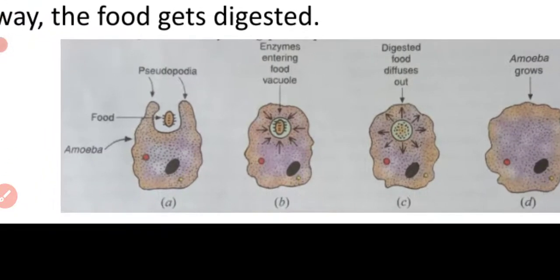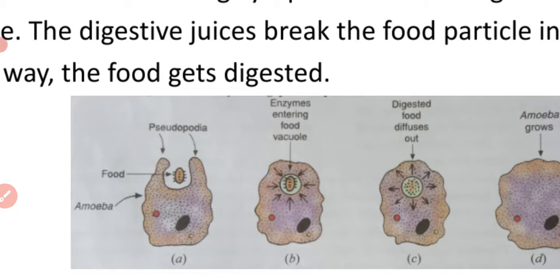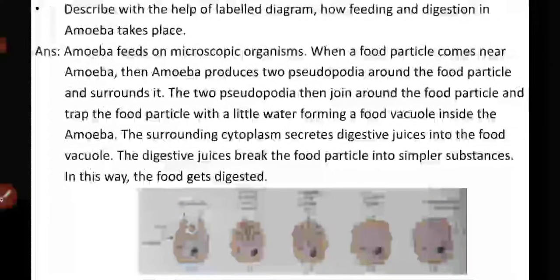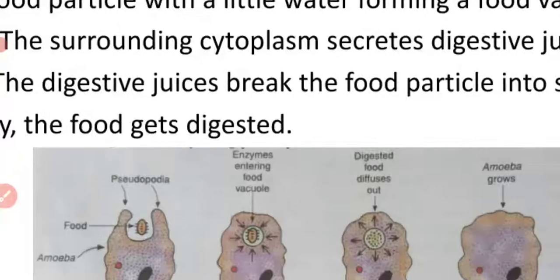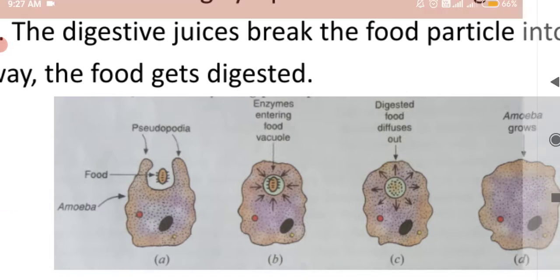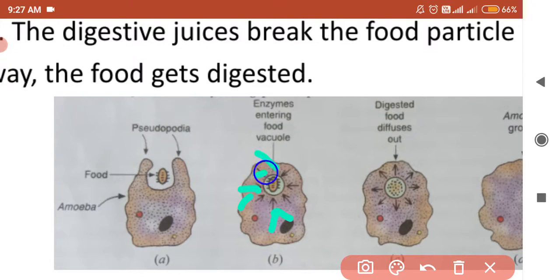In Figure B, the food particle gets trapped by the pseudopodia of amoeba and gets inside a food vacuole in the cytoplasm of the amoeba with a little amount of water. The surrounding cytoplasm, which is floating over the cell of the amoeba, secretes some digestive juices into the food vacuole. As you can see the arrow mark given in Figure B, the cytoplasm is secreting the digestive juices.